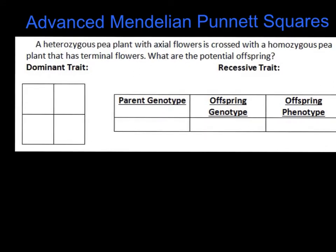The first step I always recommend is just going through and reading the problem to get an idea of what it's talking about. So this one says: a heterozygous pea plant with axial flowers is crossed with a homozygous pea plant that has terminal flowers. What are the potential offspring? If you remember from last time, the first step is to figure out what's dominant and what's recessive. In this problem, if you notice, it doesn't say directly, so you have to figure that out from the information that's presented.